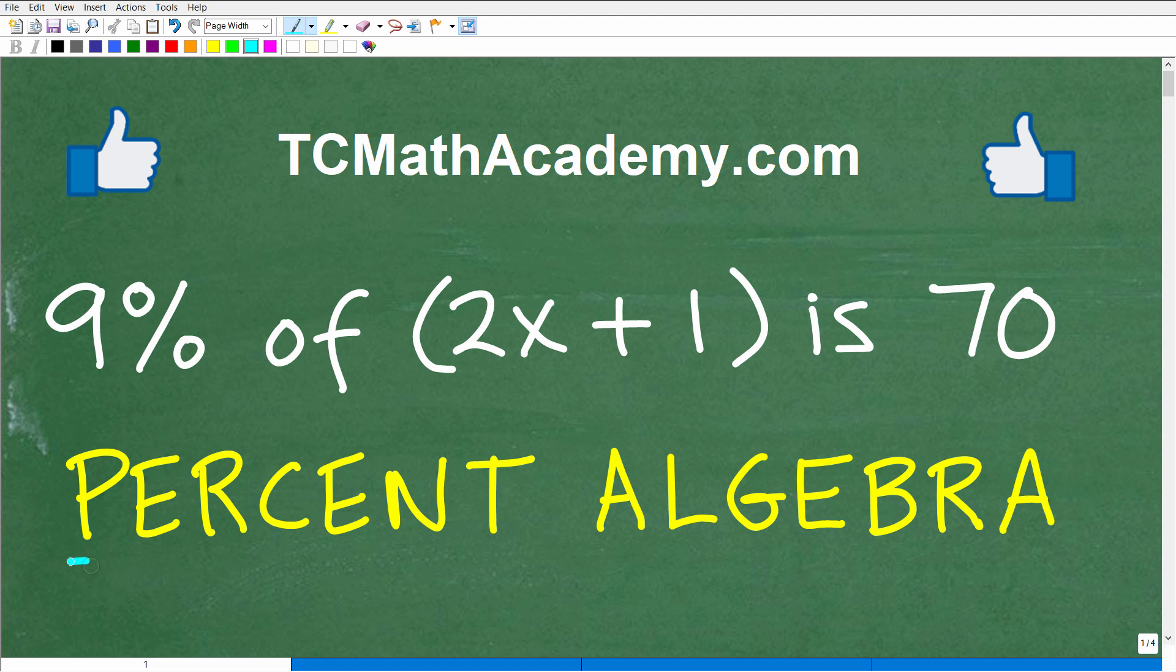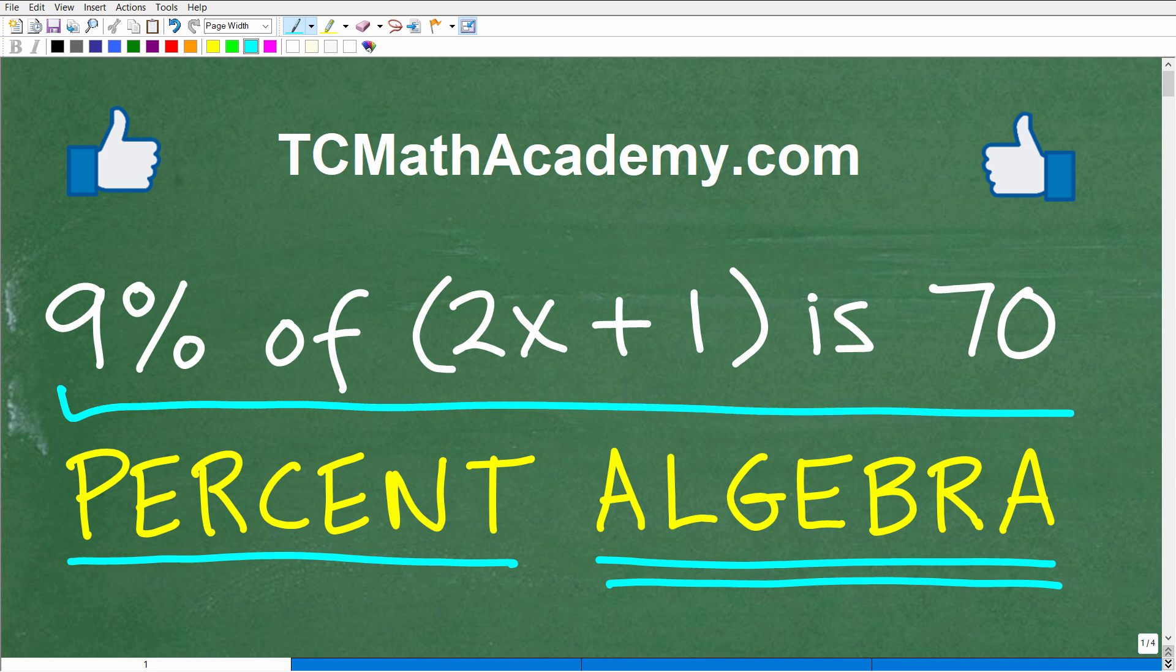Okay, so if you really understand percent and have strong algebra skills or even basic algebra skills, you should be able to solve this problem right here. The problem is 9% of 2x plus 1 is 70, and the objective of this problem is to solve for x.